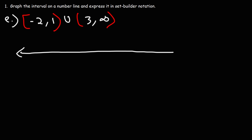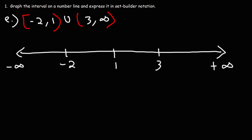So let's create a bigger number line. We have negative infinity on the left, positive infinity on the right. We have the numbers negative 2, 1, and 3 in increasing order. Starting from the left and moving to the right, we have a closed circle at negative 2 and an open circle at 1, so x is going to be between those two values. Then we pick up at 3 — we have an open circle at 3, and we're going to go towards infinity.